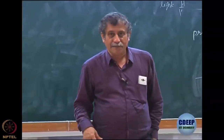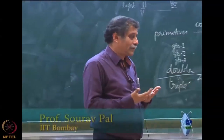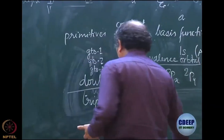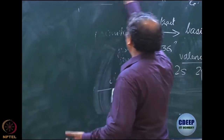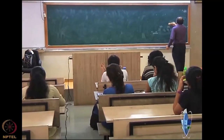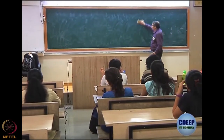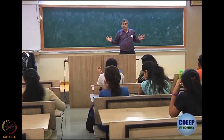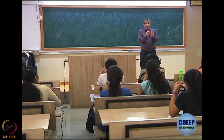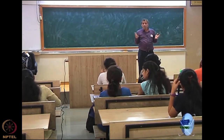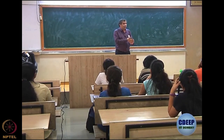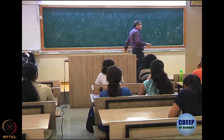We will continue with this CI and wanted to show some of the numbers - the contribution of doubles and singles. It was very clear that doubles was the most important part of the correlation energy compared to singles, mainly because of Brillouin's theorem and the two-particle nature of electron correlation. Two particles are more likely to come close together and repel, and the Hamiltonian has one- and two-particle interactions, so doubly excited determinants are also very important.